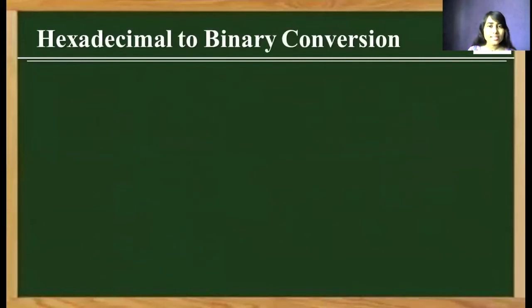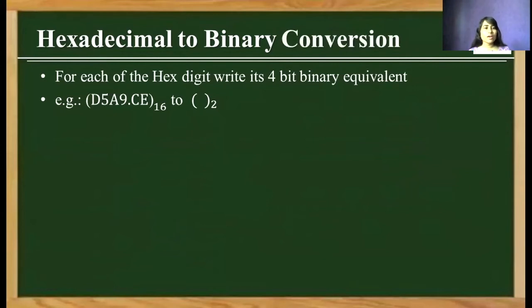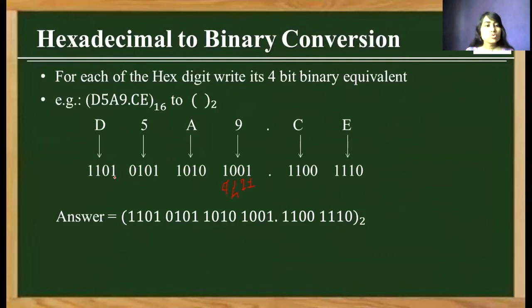Next is hexadecimal to binary conversion, which is very simple. If 4 bits of binary equals 1 hex number, then 1 hex number equals 4 bits of binary. For each individual hex digit write its 4-bit binary equivalent. For example, with hex number D5A9.CE: 9 in binary is 1001 (8+1=9), A is 1010 (8+2=10), 5 is 0101 (4+1=5), and D is 1101 (8+4+1=13).